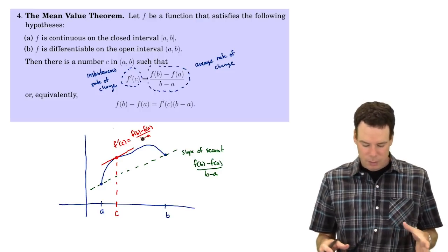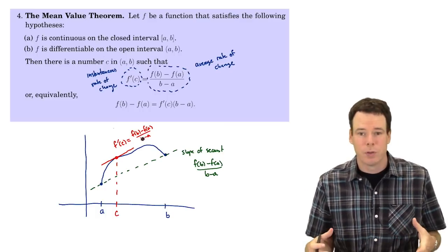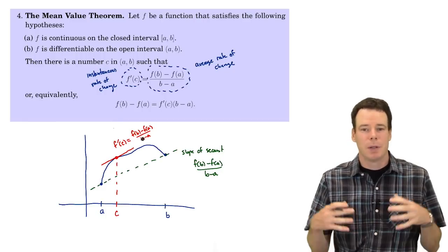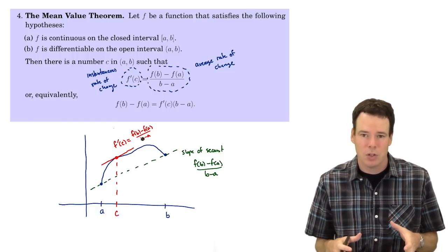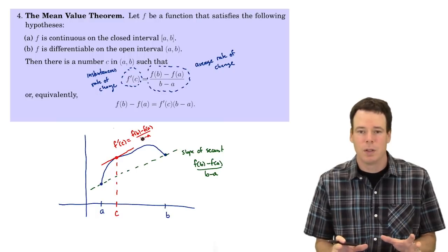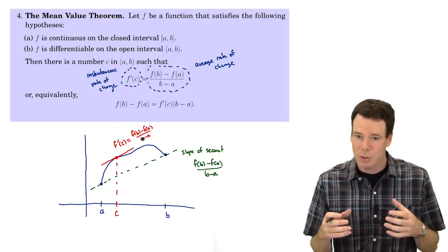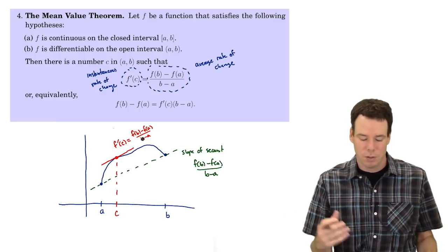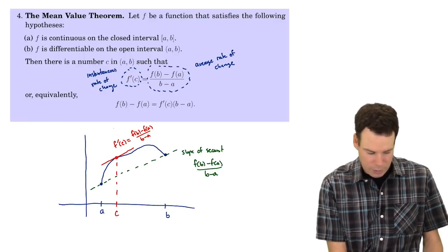This theorem should be rather intuitive, but it's important because it allows us to prove much bigger theorems. Taking an intuitive idea and putting it on a solid foundation is the point. I'm not going to do the proof here, but in Calculus 2 and Calculus 3 we prove much bigger results using this as the foundation. So let's go ahead and see how we can use the mean value theorem in practice.